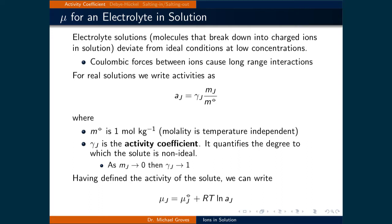Like all real solutions, we will write their activities to include an activity coefficient, meaning that the activity of component J is equal to the activity coefficient of component J times the molal concentration of component J divided by the standard molal concentration. We will use the standard molality of one mol per kilogram, and we use molality instead of molarity because molality is temperature independent.